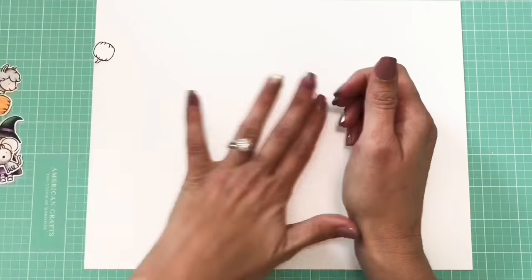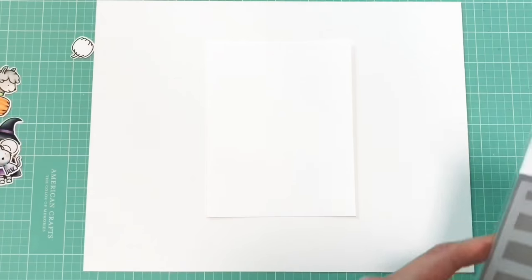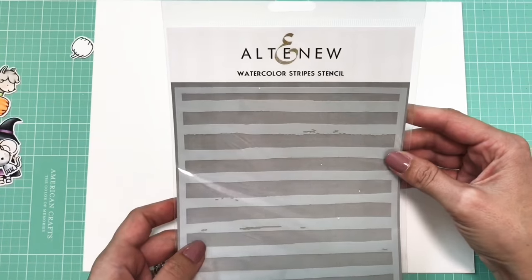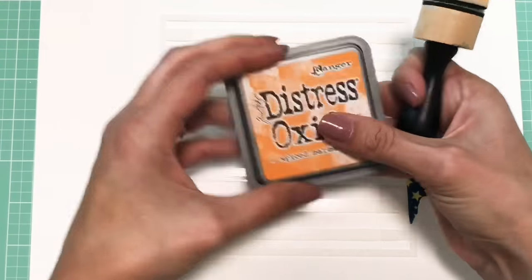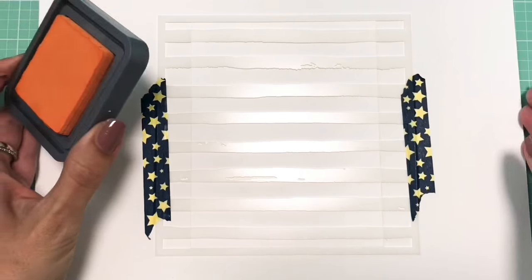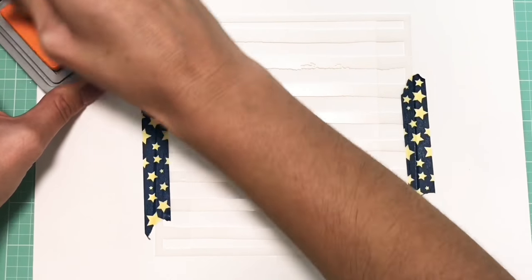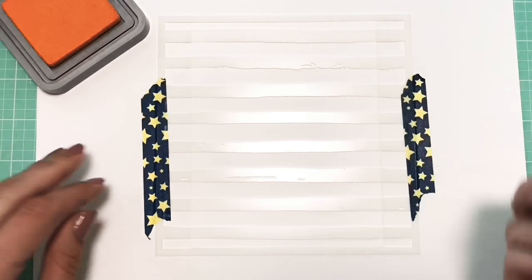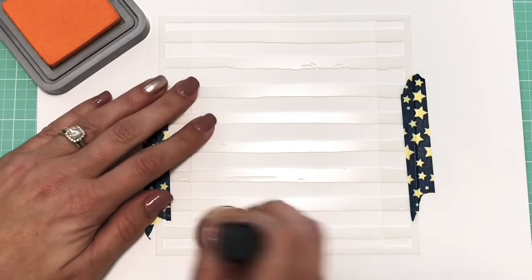I did cut all those out with my Brother Scan and Cut. And now I'm going to be working on a little background here. I'm using some of my Distress Oxide inks. And I just got this color. It's Spice Marmalade, I believe.